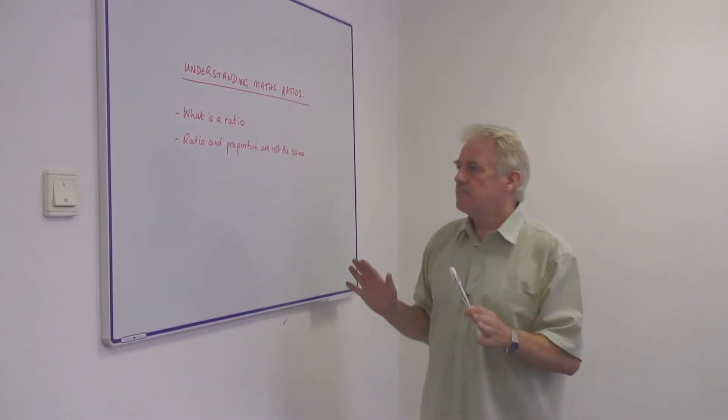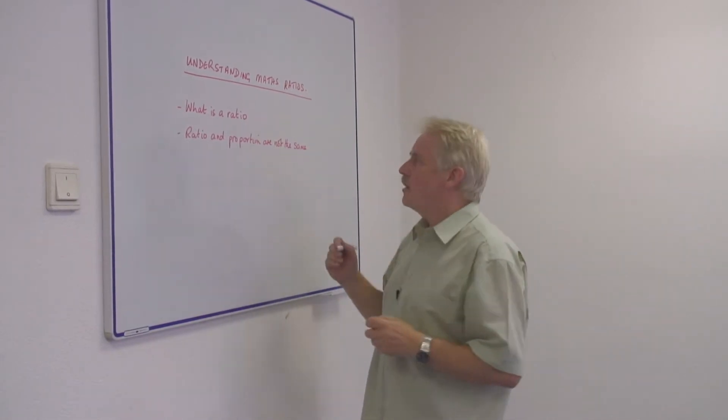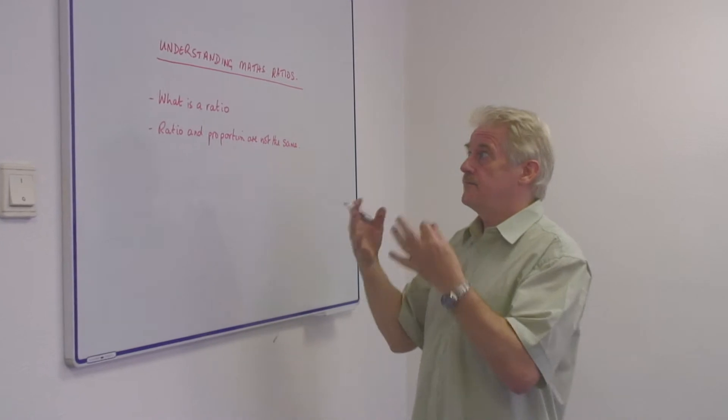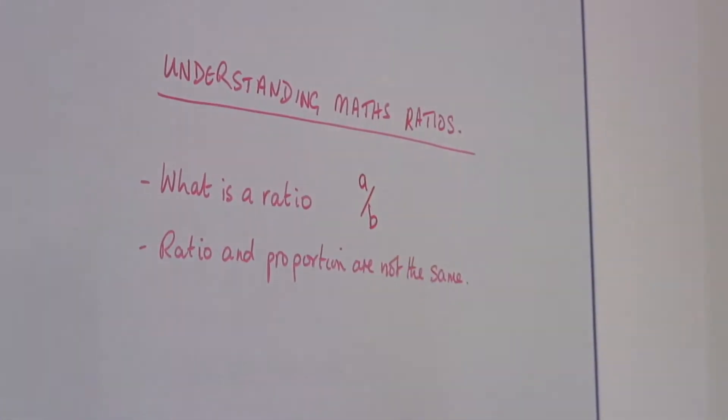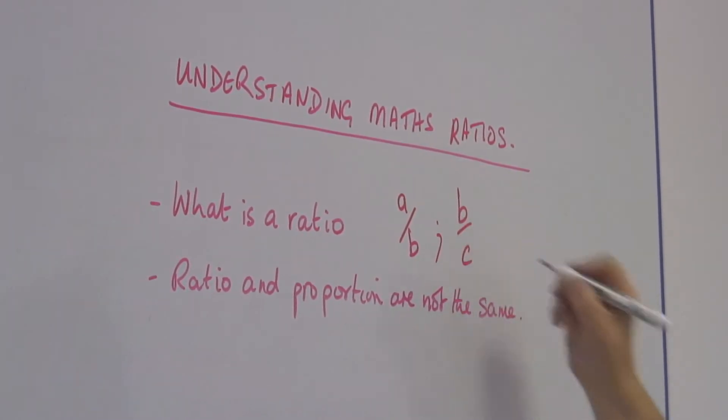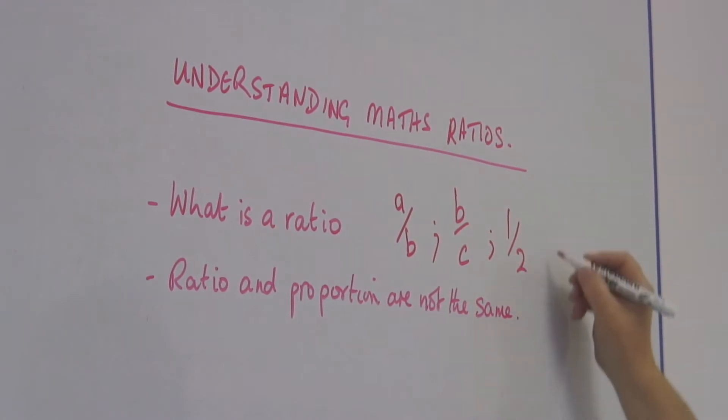Well, a ratio is simply one number divided by another. If I want to write it as variables, I'd say it's a over b, or it could be b over c. They are all ratios. 1 over 2 is a ratio.